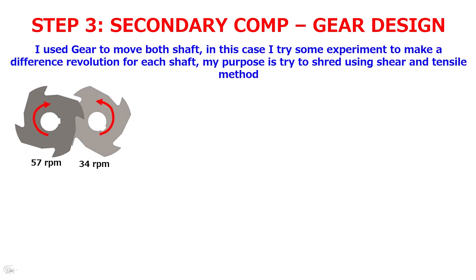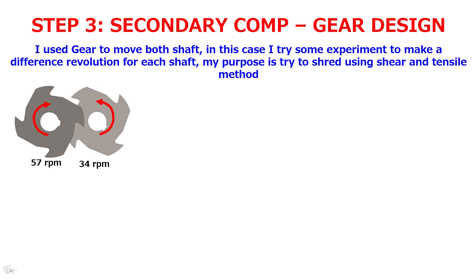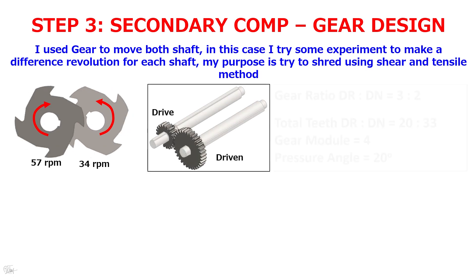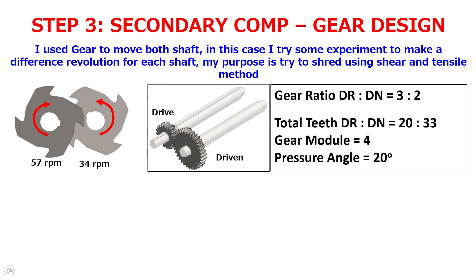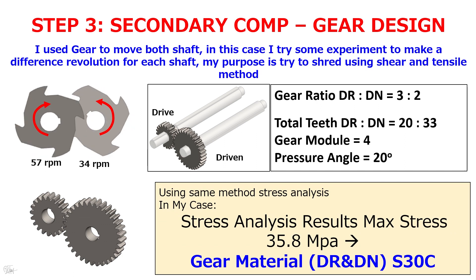The next step is gear design. I use gears to move both shafts. I tried some experiments to make a different revolution for each shaft — my purpose is to shred using both shear and tensile method. So I decided to use a 3-to-2 gear ratio with a standard module and pressure angle. Based on simulation, I need S30C for the gear material. By the way, don't forget surface treatment for durability.